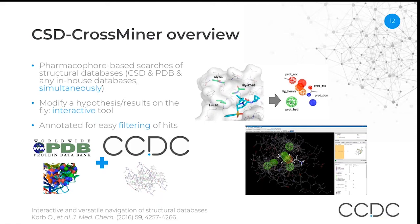The databases are annotated with information related to the crystallographic structure — for example, the CSD ref code, EC number, PDB code, type of molecule, resolution, protein target, and many other annotations. Those annotations can be used not only to retrieve information about the structure, but also to filter the results — for example, to retrieve only specific types of structures that match the pharmacophore query.